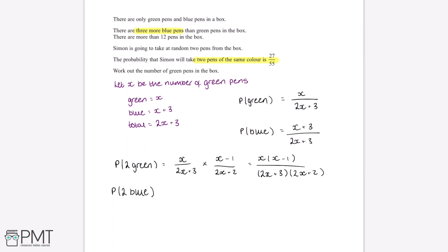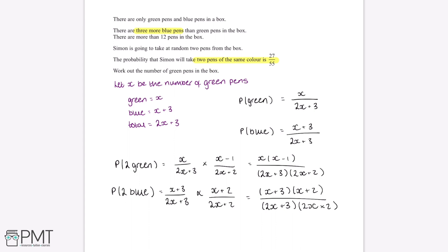Using the same process for two blue pens: the probability of the first blue pen is x plus 3 divided by 2x plus 3. After removing one blue pen, there are x plus 2 blue pens and 2x plus 2 total pens, giving (x plus 3)(x plus 2) divided by (2x plus 3)(2x plus 2). Because two pens of the same colour can be either two green or two blue, we add these probabilities together and set the sum equal to 27 over 55.